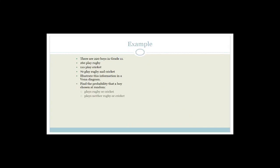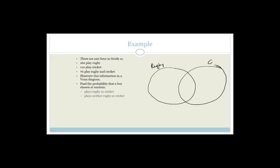Now let's do an example. There are 220 boys in grade 11: 160 play rugby, 110 play cricket, and 70 play rugby and cricket. We need to illustrate this on a Venn diagram — one circle for rugby and one for cricket. There are 220 boys in our universal set. We know that the intersection of rugby and cricket is 70.